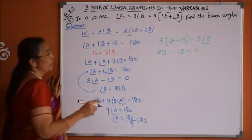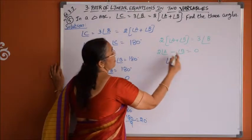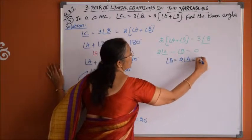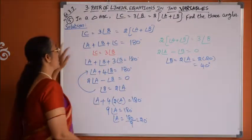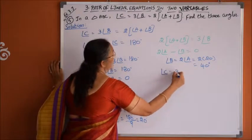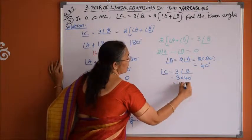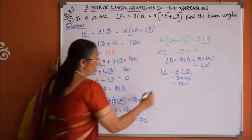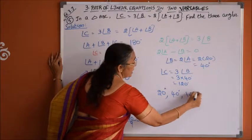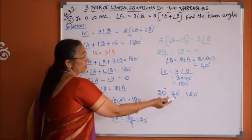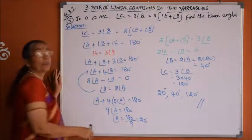We got the first angle. It is very easy to find the other angles. Angle A is 20 degrees and angle B is 2 times of angle A, which is 2 into 20, equals 40 degrees. Angle C is 3 times of angle B, that is 3 into 40, equals 120 degrees. Therefore the angles of the triangle are 20 degrees, 40 degrees, and 120 degrees. Adding: 20 plus 40 is 60, and 60 plus 120 is 180 degrees, so it satisfies the given condition.